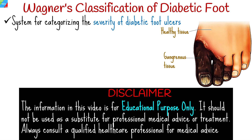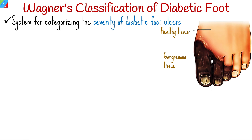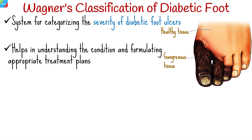Wagner's classification is a widely utilized system for categorizing the severity of diabetic foot ulcers, helping healthcare professionals to better understand the condition and formulate appropriate treatment plans.